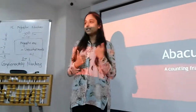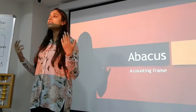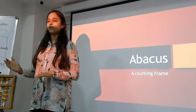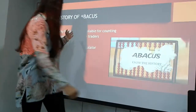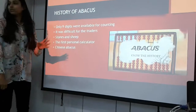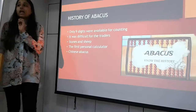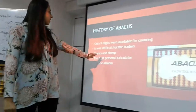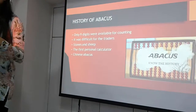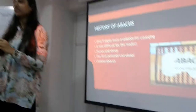So today my topic is Introduction of Abacus. I will be talking about Introduction of Abacus and how it helps a child in development. As I mentioned, there were only 9 digits available for counting, hence it became very difficult for the traders. After the sand calculation came up, people started using stones and sheep to calculate, because again their number of beads was restricted to 9.